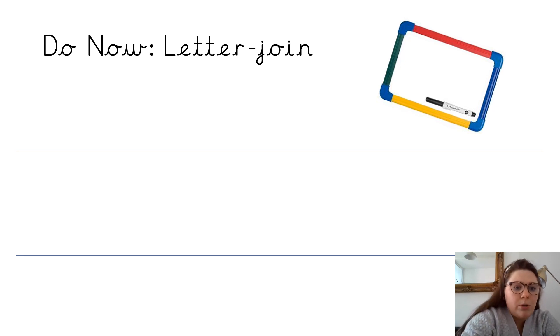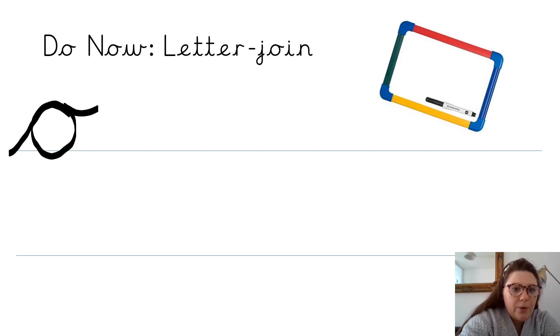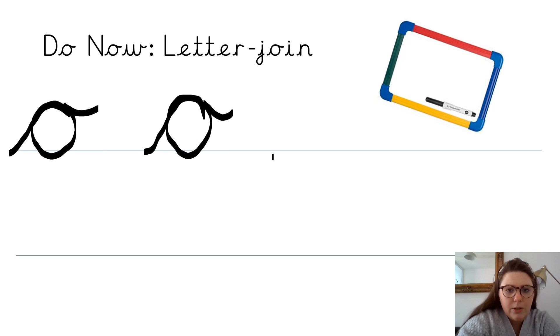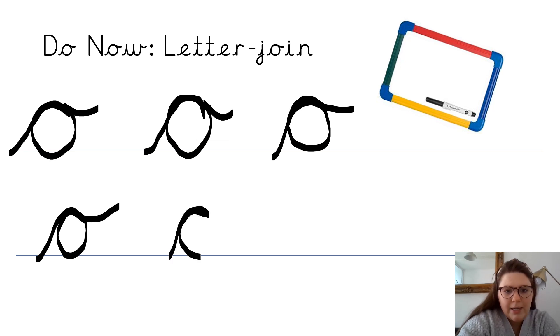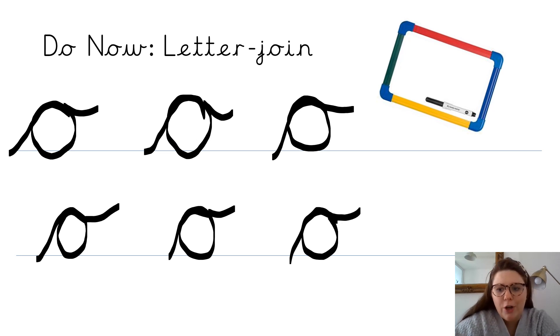Today we're going to practice writing the letter O, and lots of children have difficulty with this letter, so just try your best. It's important to start from the line as if you were doing a C and go round and up and join and then a hook. So you're going to start on the line, work as if you're going to draw a C, then go back and join and then go back and hook like this. Have a go at that now - I know it's a little bit tricky so just try your best.